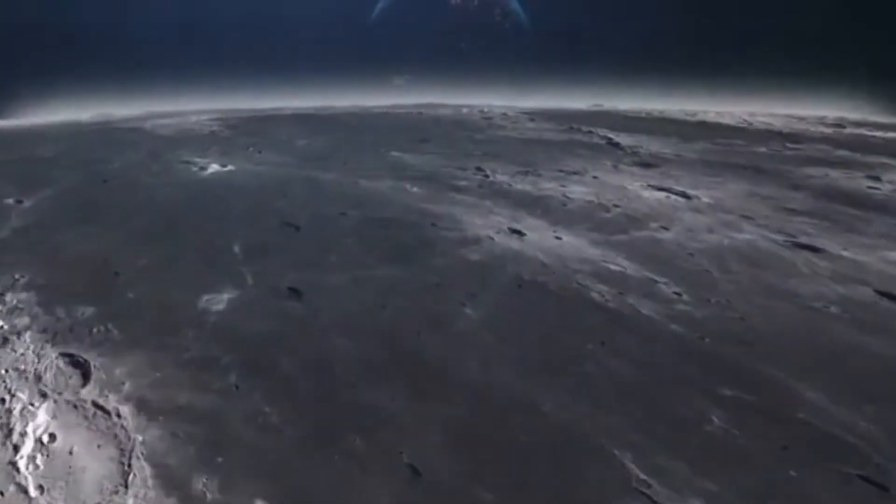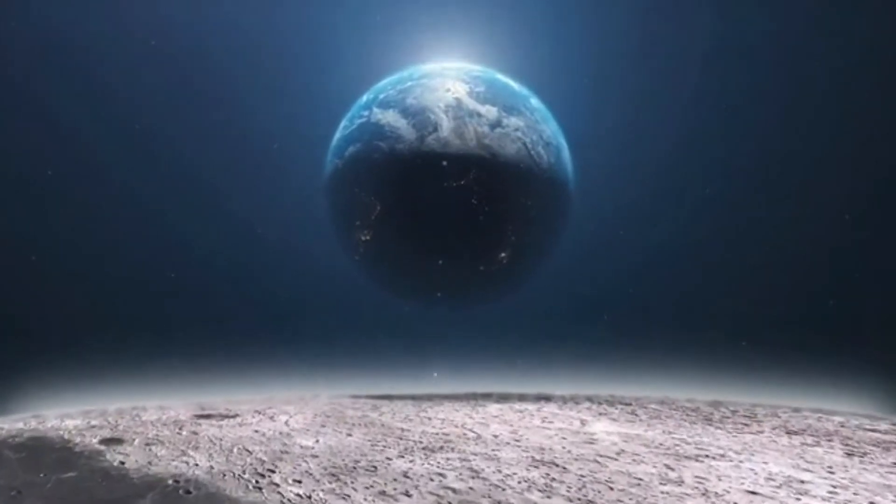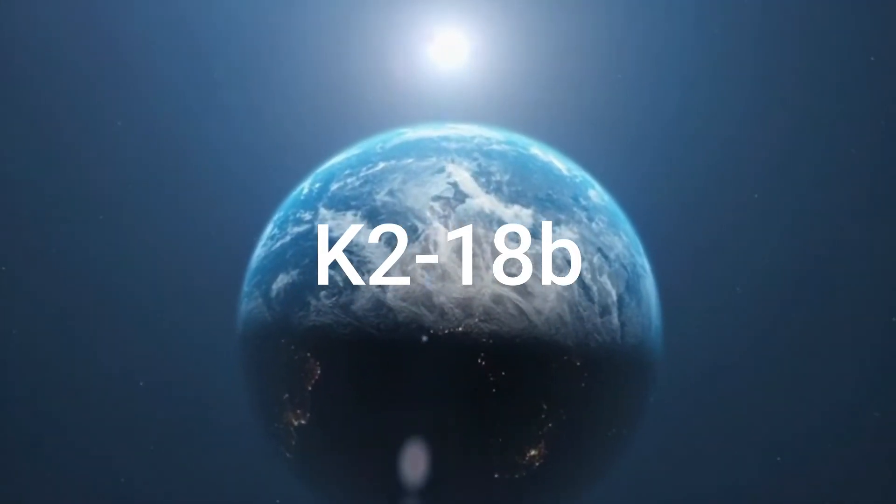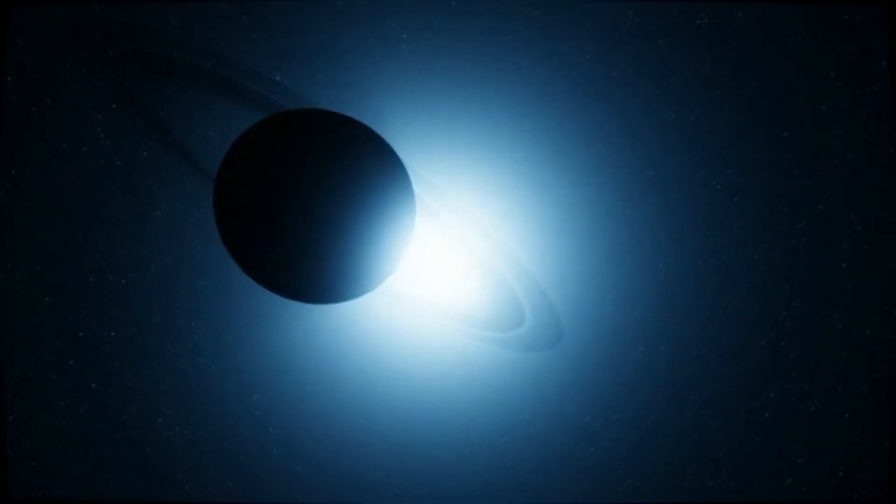On the distant exoplanet K218b, faint echoes of potential life resound through the void. Situated some 124 light-years away in the constellation Leo, K218b has long tantalized astronomers with its promise of a habitable realm beyond our solar system.